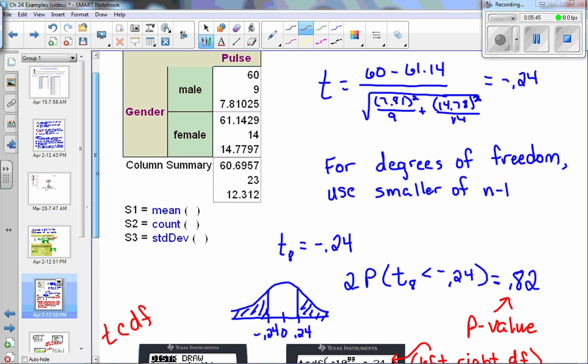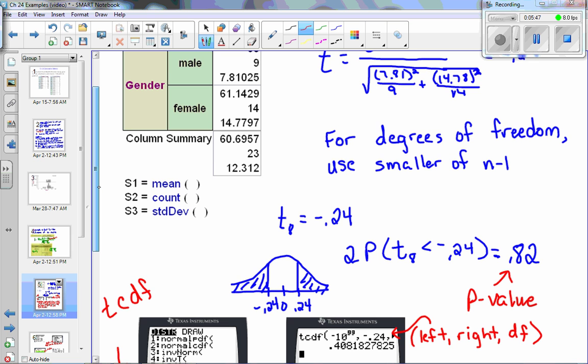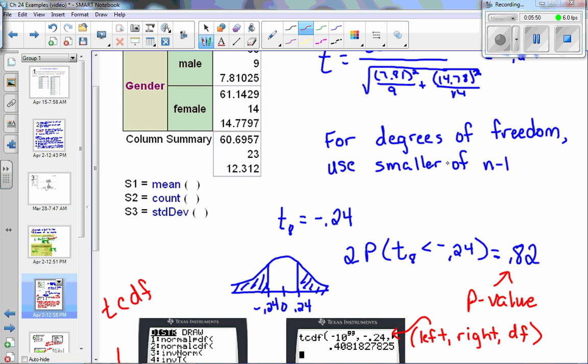Now for degrees of freedom, when we have two different samples, one option is to use the smaller of your two n sub m minus 1 values. For example, in this case, the smaller of the two samples was the males. So 9 minus 1 is 8. So I'm safe to use 8 for my degrees of freedom. Now that's if you're going to do it by hand. There's a really complicated formula in the book that you really don't need to use. If you do it on the calculator, which I'll show you later, that will actually use a more accurate degrees of freedom. But this is okay if you need to do something by hand.